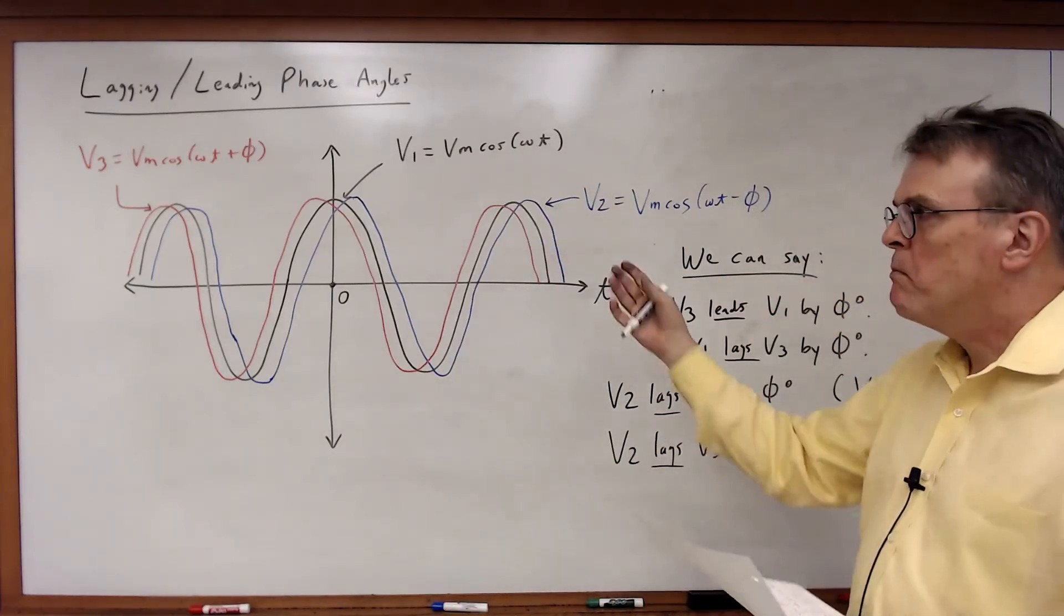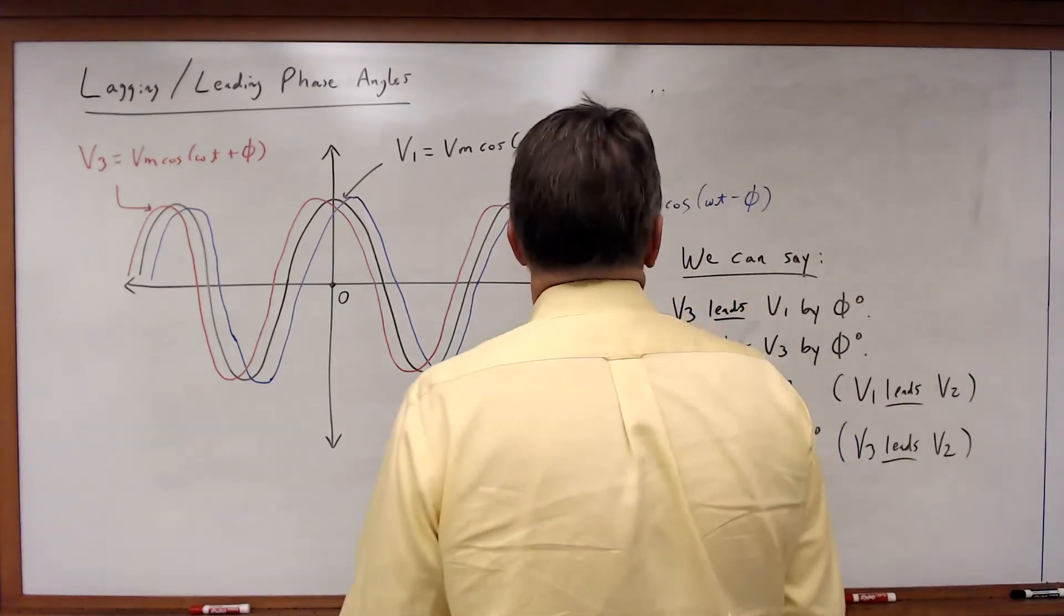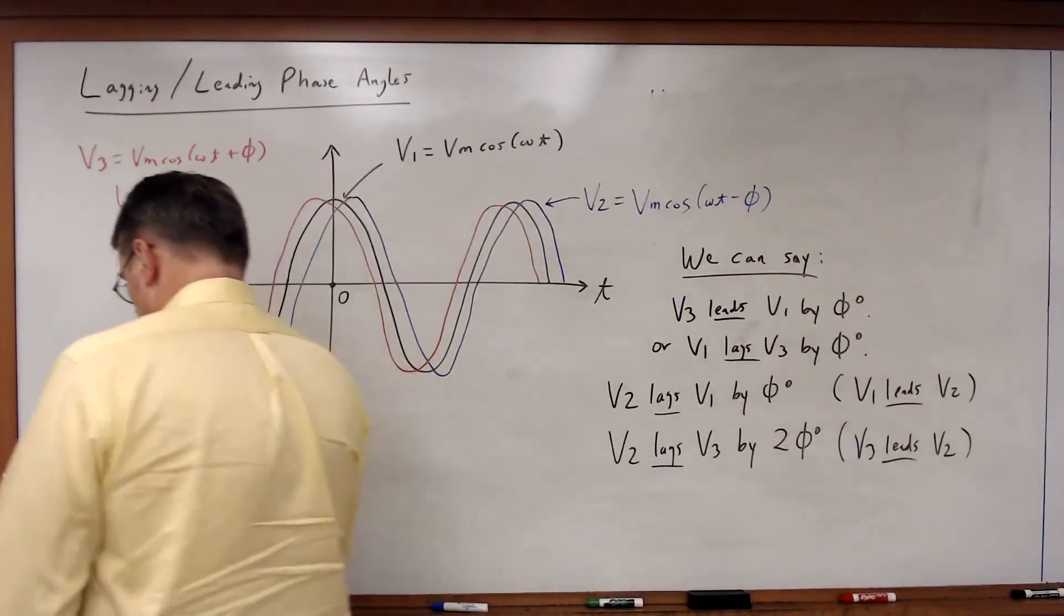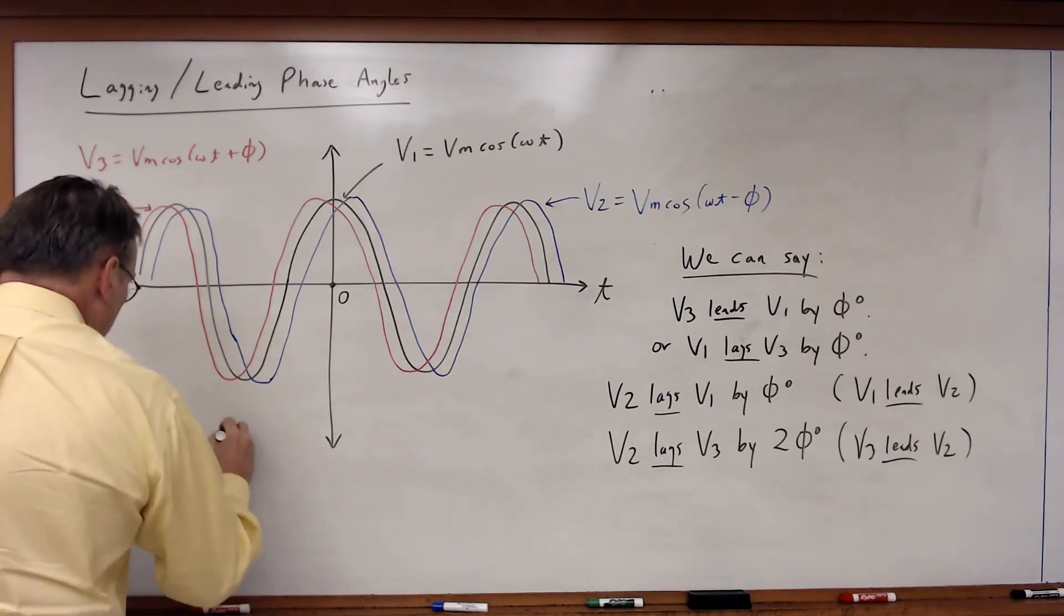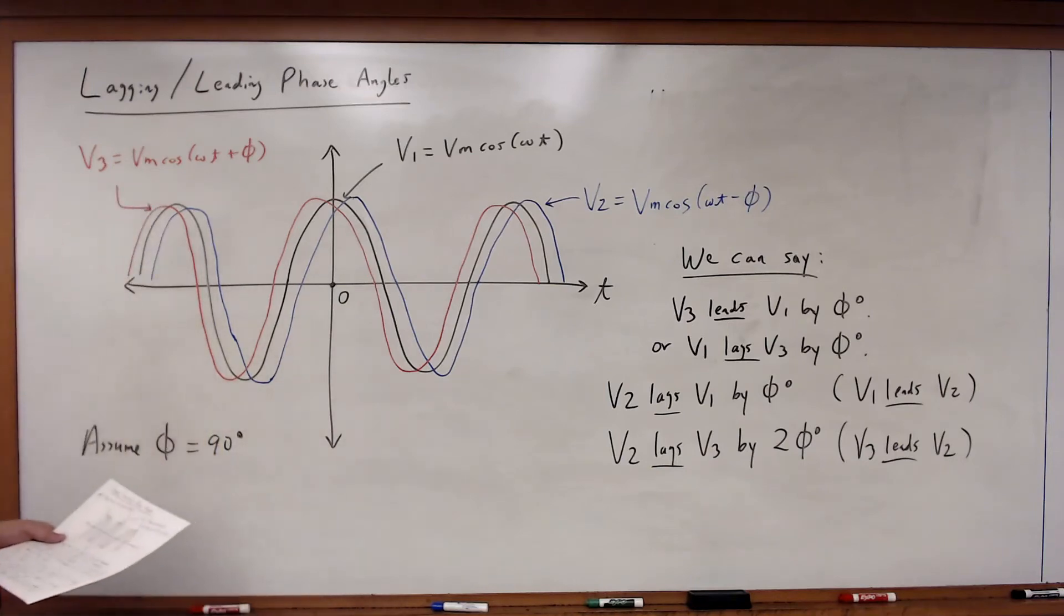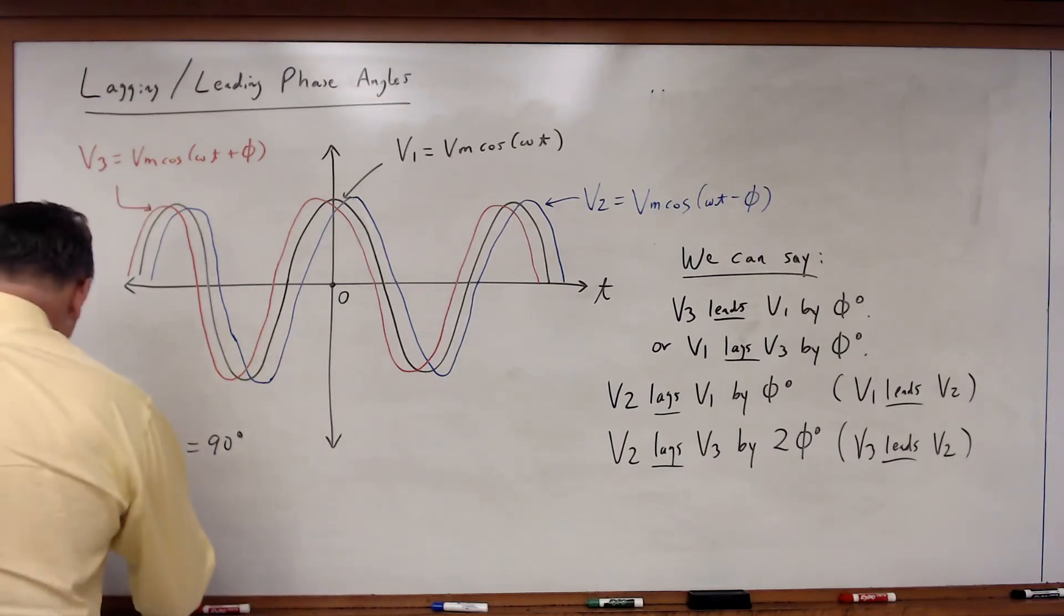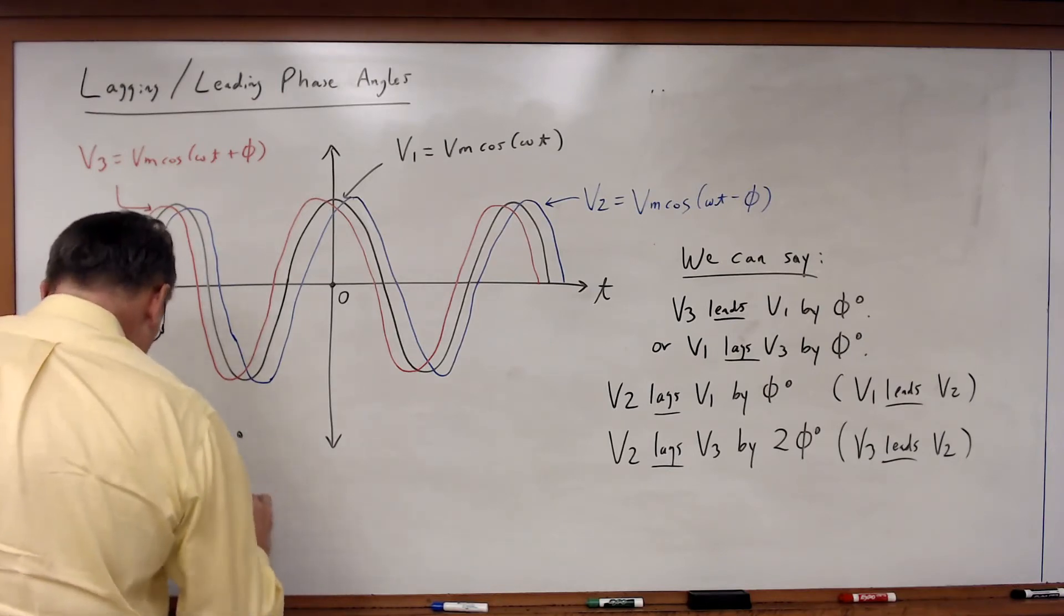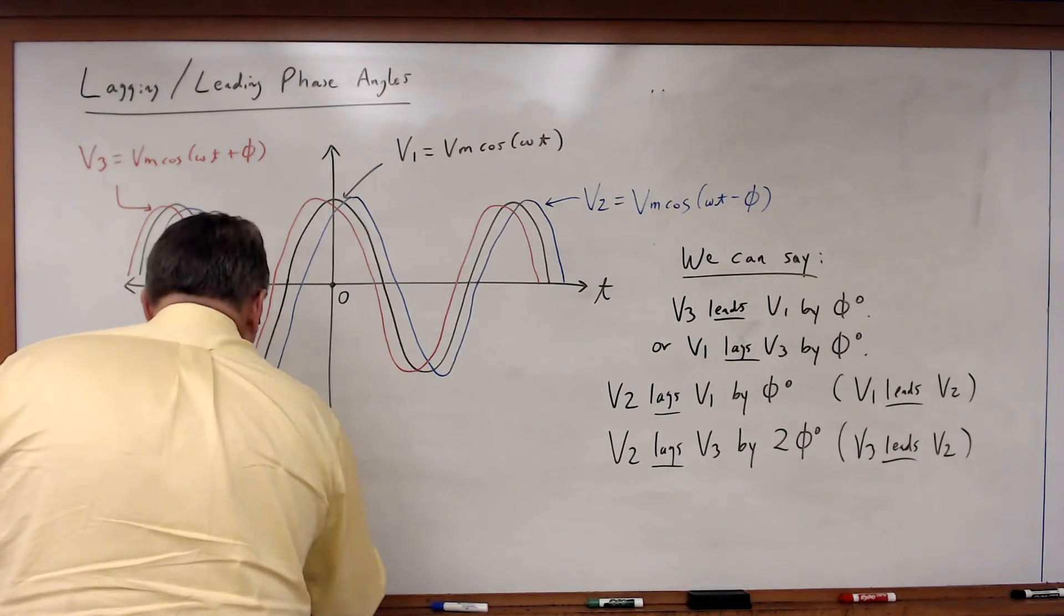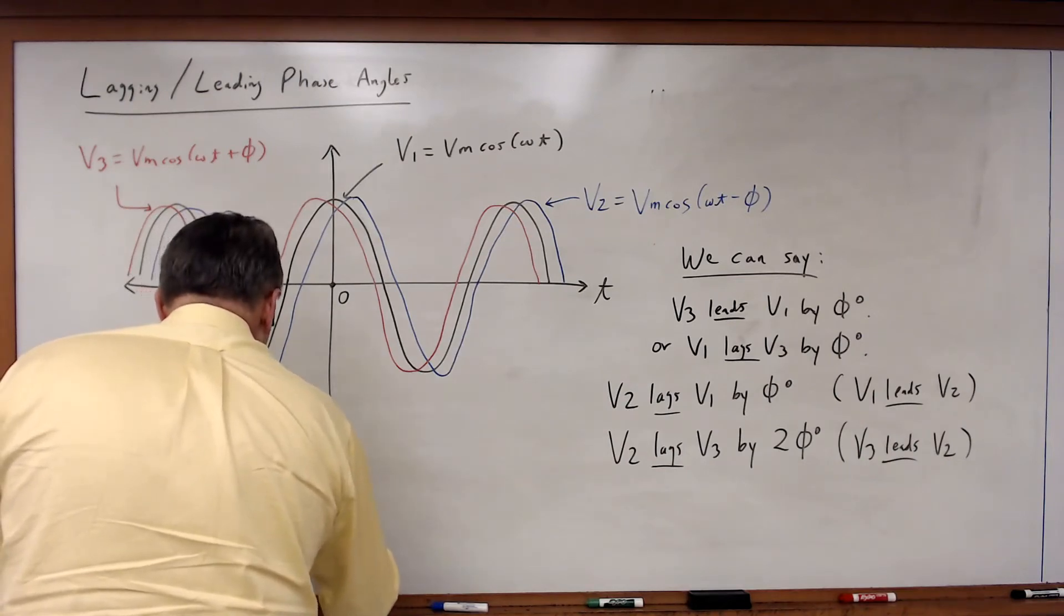Now given this definition of leading and lagging, let's put out a number here. Let's assume φ is equal to 90 degrees. In that case, v2 would be equal to Vm times cosine omega t minus 90 degrees.